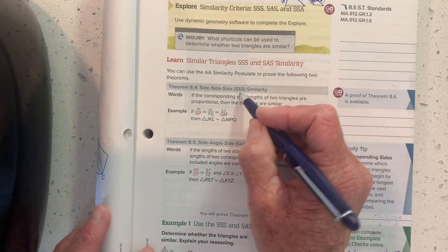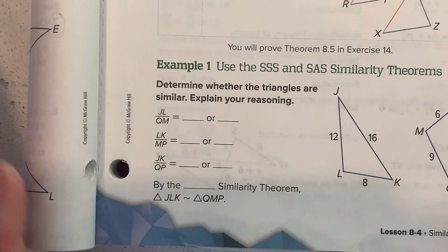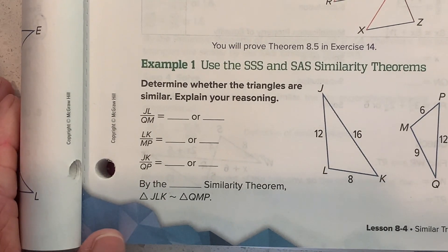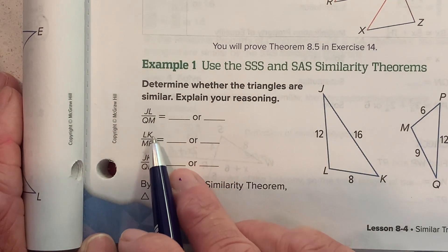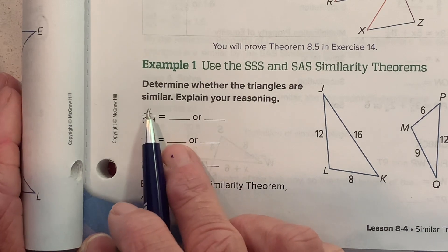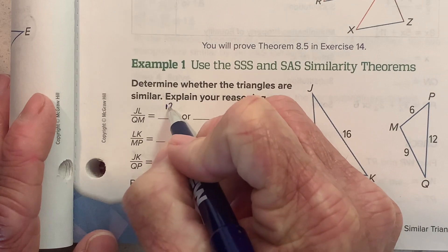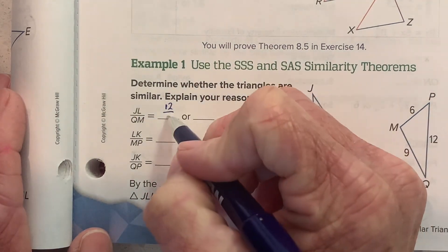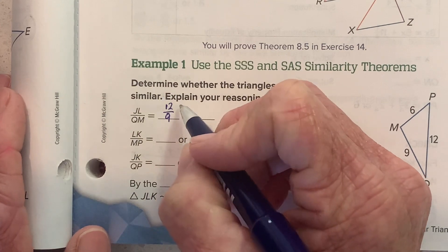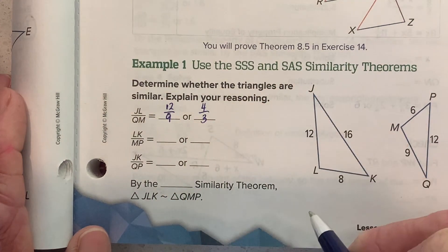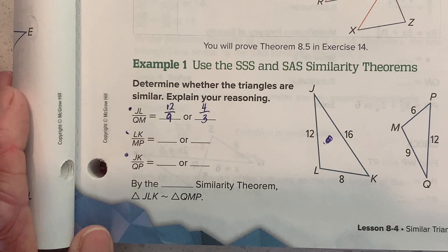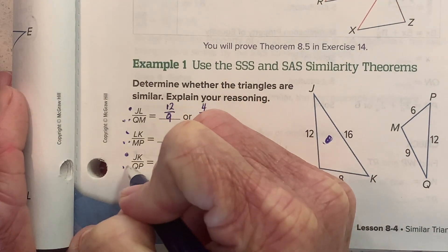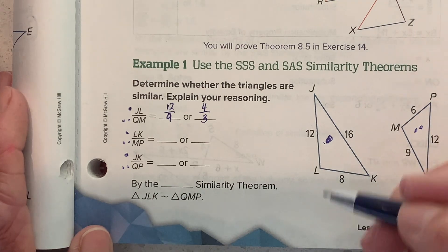So we have Side-Side-Side and Side-Angle-Side. In example one, we determine whether the triangles are similar using one of these two tests. They're asking us to set up ratios: how long is side JL? The distance from J to L is 12 over QM which is 9, and 12 over 9 reduces down to 4 thirds. The values in the top of each ratio come from the bigger triangle, and the bottom from the smaller triangle, so you have to be consistent.